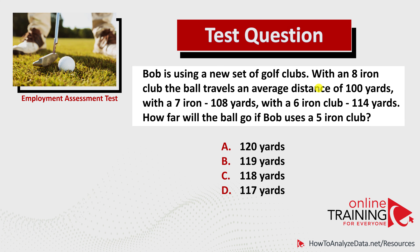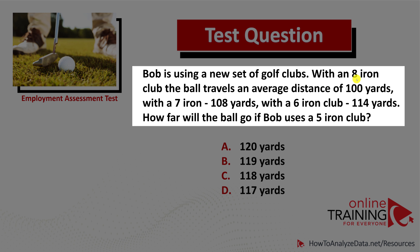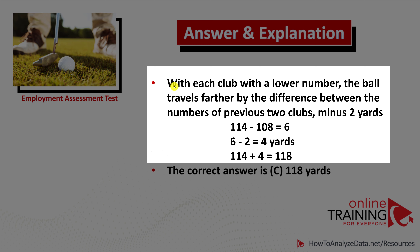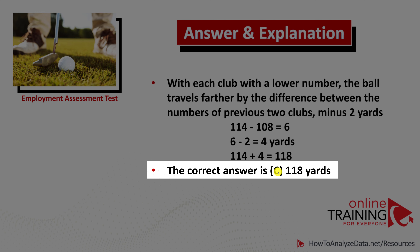When you read through the question carefully, you see the pattern. For every iron reduced, the ball travels a longer distance. The 8-iron is 100 yards, the 7-iron is 108 — an increase of 8. The 6-iron is 108 plus 6, which is 114. The first increment was 8 and the second was 6, which is 8 minus 2. So with each lower-numbered club, the ball travels farther by the previous increment minus 2 yards. The next value is 114 plus 4, which equals 118. The correct answer is C, 118 yards.